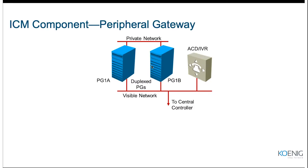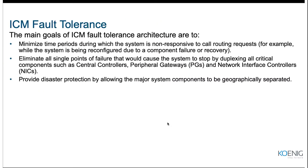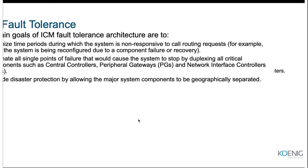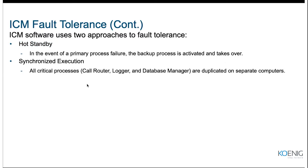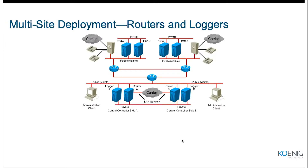PGs can also be deployed as a duplex pair with an active and standby server. The redundancy and fault tolerance in ICM is available for most critical components — router, logger, admin servers, and PGs — all duplexed to provide fault tolerance. When duplexed, they work in hot standby mode, meaning if router A is processing a call, router B is fully aware of the process but sits idle and does not process calls.